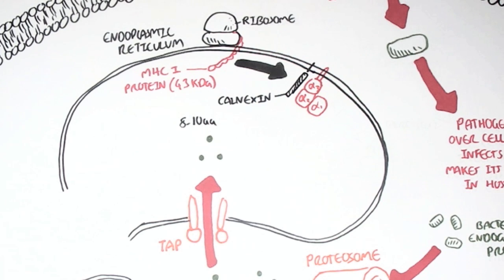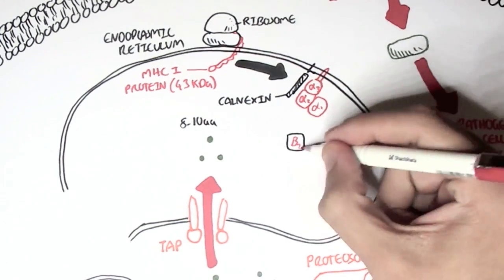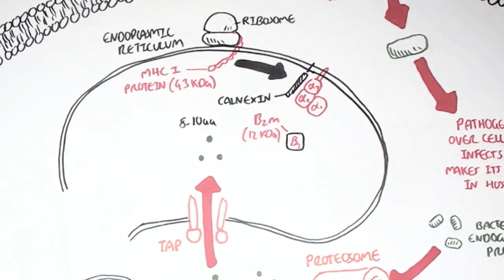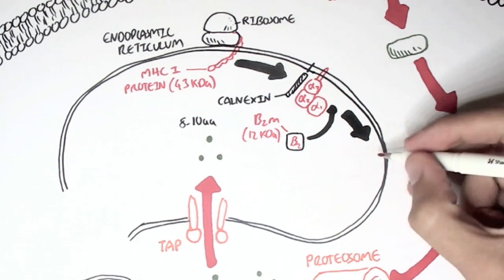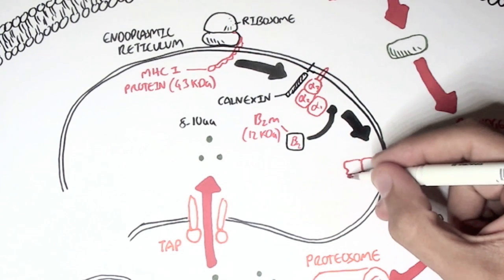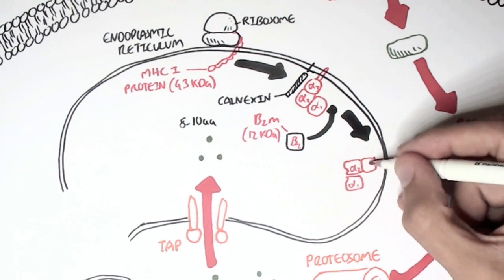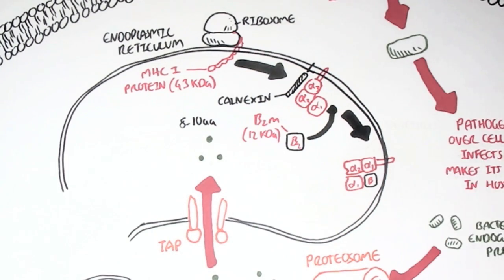This incomplete MHC 1 is bound to a protein called calnexin. Now calnexin's function is as a chaperone, bringing the MHC 1 through the endoplasmic reticulum, to prepare it. Following this, another protein, which is a microglobulin, beta-2m, about 12 kilodaltons in mass, will attach to this incomplete MHC class 1, which will essentially complete it. So now we have a complete MHC class 1, made up of alpha 1, 2, 3, and beta-2 domains.